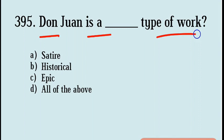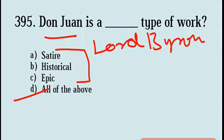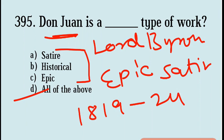Next question: Don Juan is a poem — what type of work is it? Options are Satire, Historical, Epic, All of the above. Correct answer: Option D, All of the above. Don Juan is a poem written by Lord Byron. Byron himself called it an epic satire. The Don Juan poem was published between 1819 to 1824.